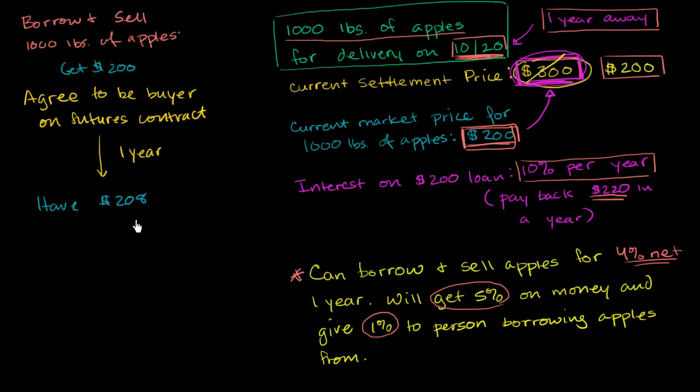Now, I can use $200 of that to essentially uphold my part of the futures contract, to buy the apples for $200 for that agreed upon price. So $200 to buy apples. And I know I can do this, regardless of what the market price is, because that was the delivery price on the futures contract. So now I have $8 net, and those apples that I just bought, those 1,000 pounds of apples, I can then use those apples to return it to the person that I borrowed the apples from.